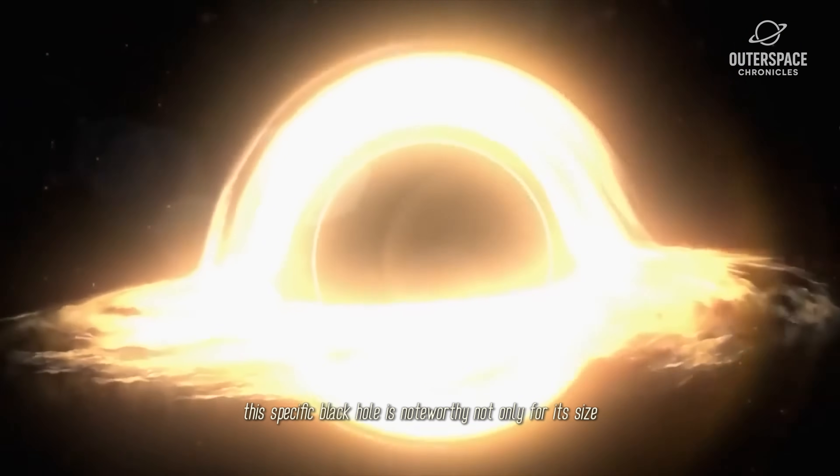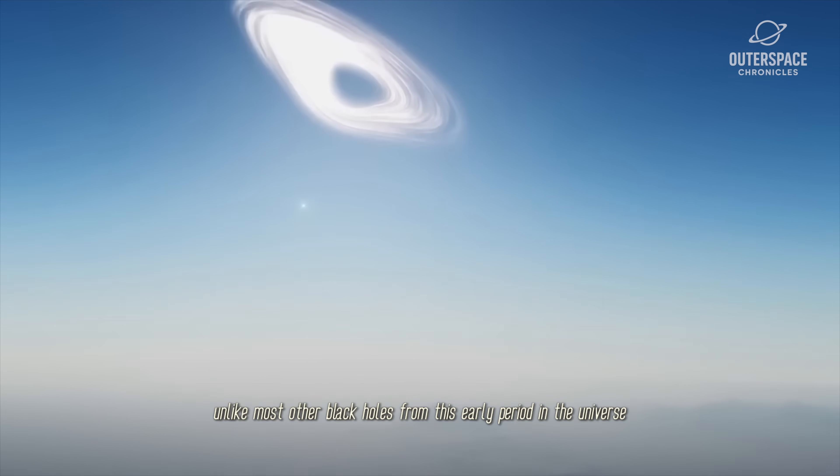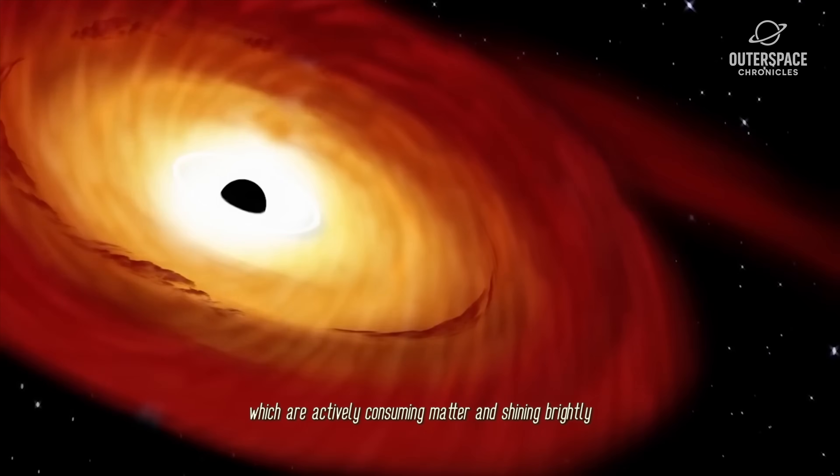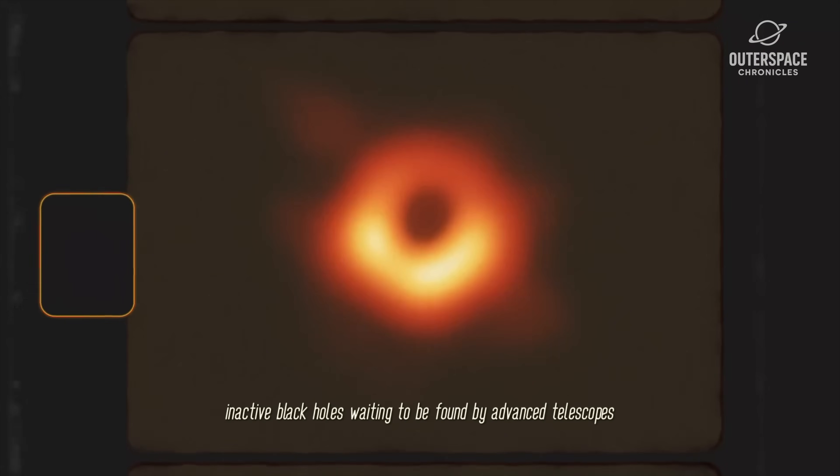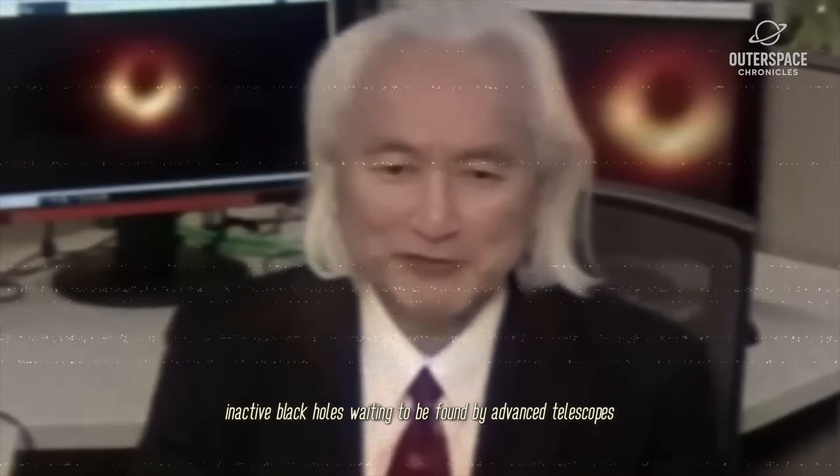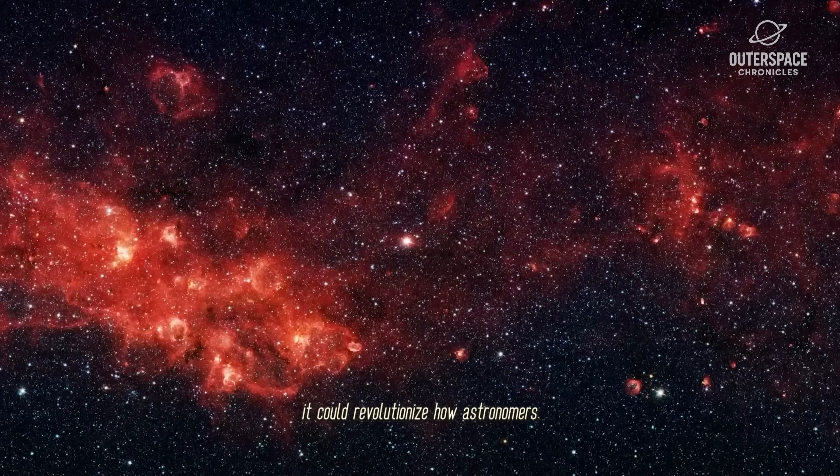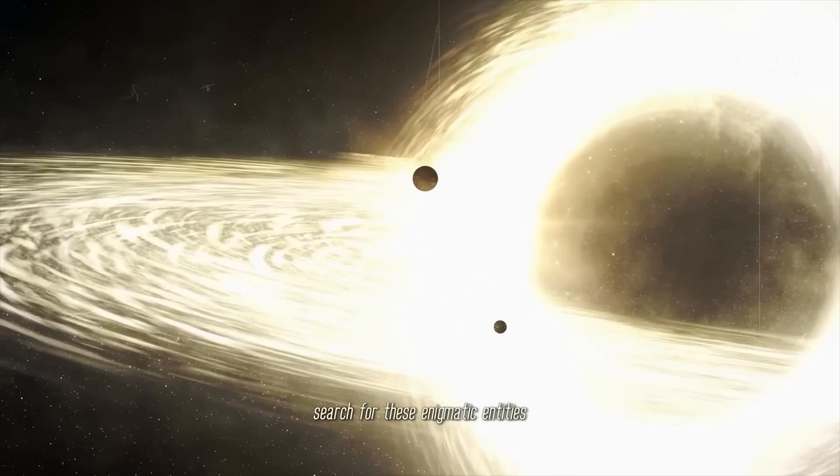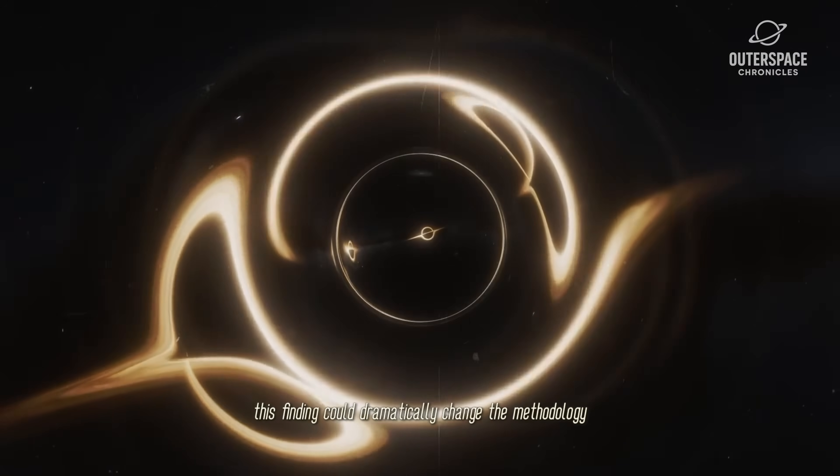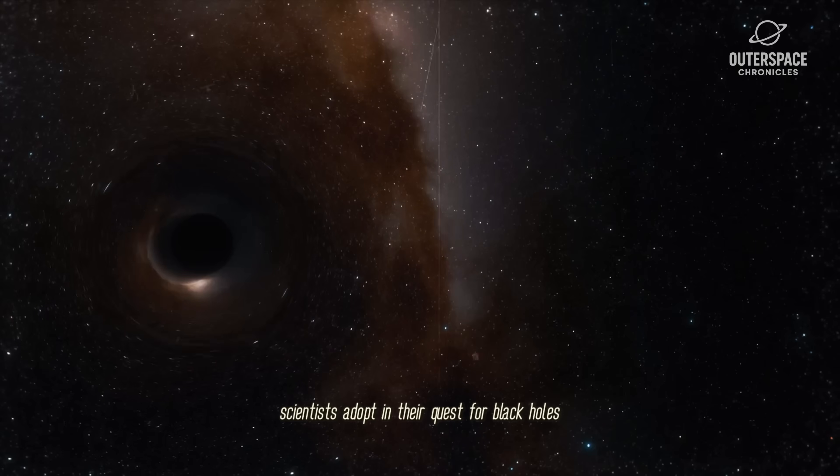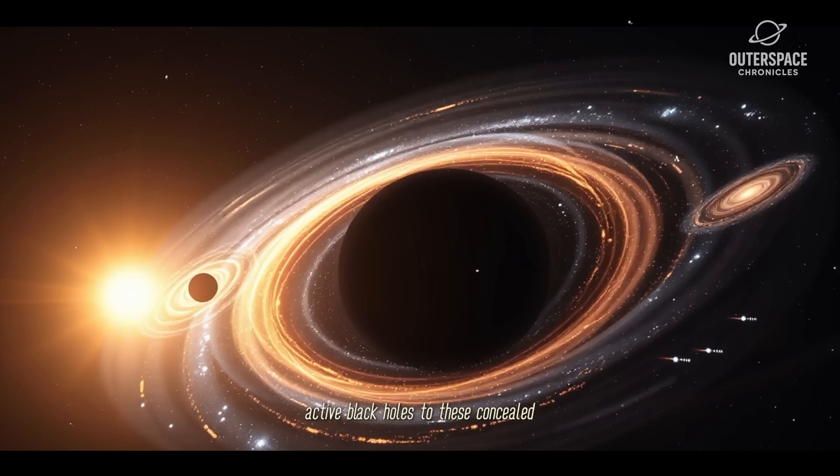This specific black hole is noteworthy not only for its size, but also for its inactivity. Unlike most other black holes from this early period in the universe, which are actively consuming matter and shining brightly, making them easier to detect, this dormant giant suggests there might be many more inactive black holes waiting to be found by advanced telescopes like the Webb Telescope. If dormancy is indeed a common phase in a black hole's life cycle, it could revolutionize how astronomers search for these enigmatic entities in space. This finding could dramatically change the methodology scientists adopt in their quest for black holes, prompting them to shift their attention from solely bright, active black holes to these concealed, dormant giants.